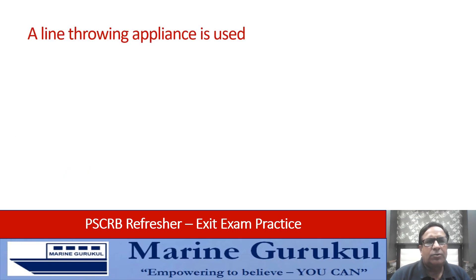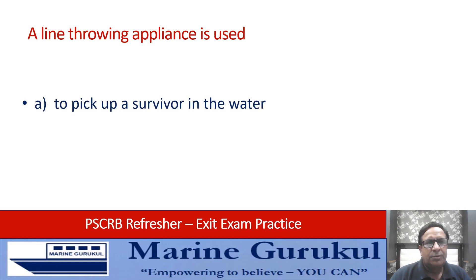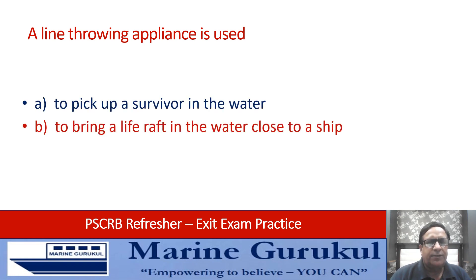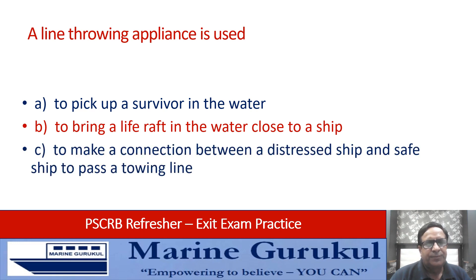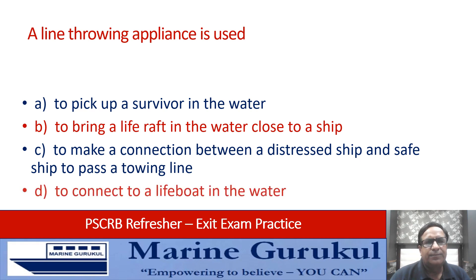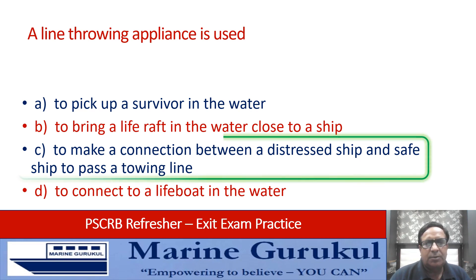A line throwing appliance is used to: pick up survivors in water, bring a life raft in the water close to the ship, make a connection between a distress ship and a safe ship to pass a towing line, or connect to a lifeboat in the water. The answer is C — to make a connection between the distress ship and the safe ship to pass the towing line.